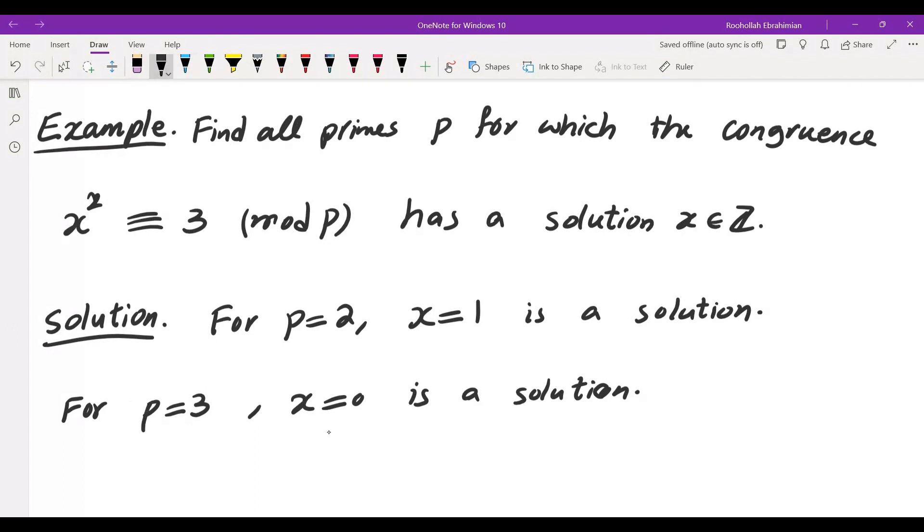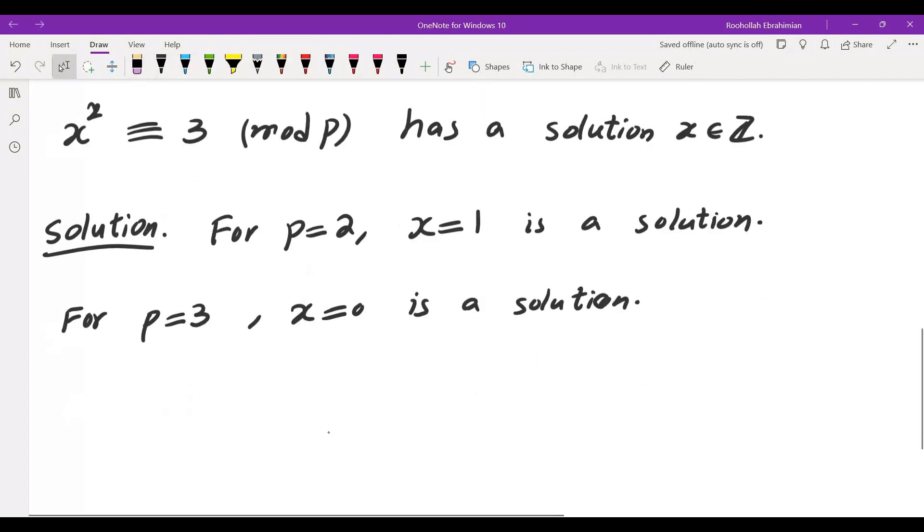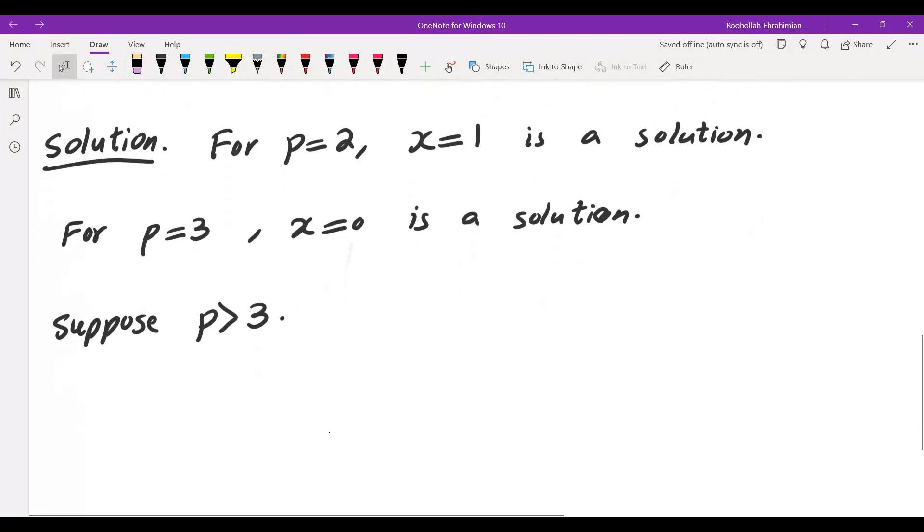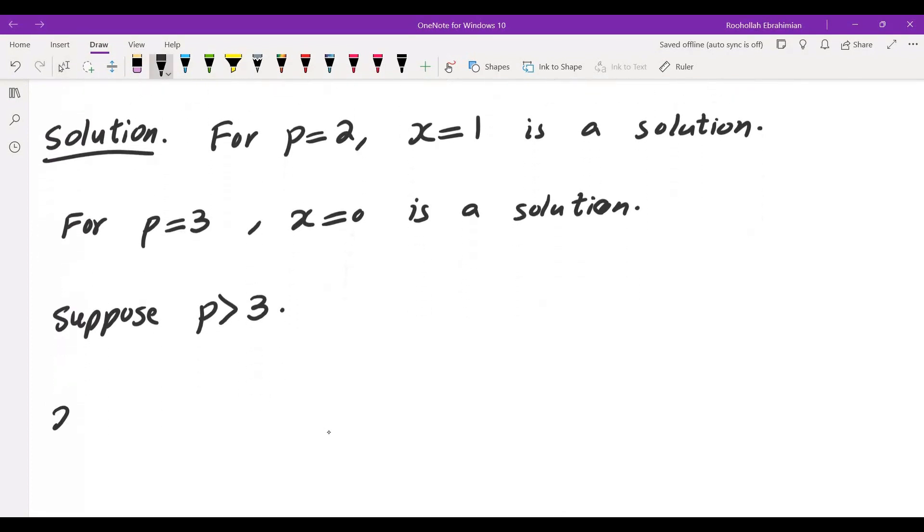So let's now assume that P is not 2 and not 3 either. Okay, so suppose P is greater than 3. X squared congruent to 3 mod P has a solution if and only if 3 over P is 1. The Legendre symbol is 1.